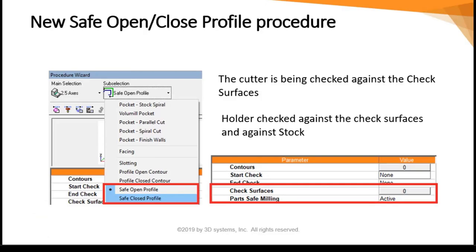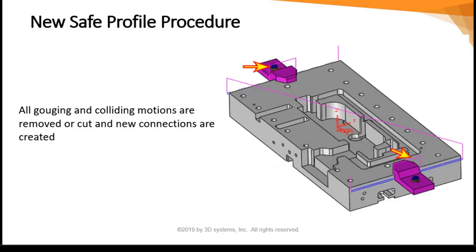In addition to the existing profile procedures, in version 15 we introduce new safe opened and closed profile procedures. The cutter is checked against the check surfaces, and the holder is checked against the check surfaces and against the stock. As you can see in the image, all gouging and colliding motions are removed or cut, and new connections are created.